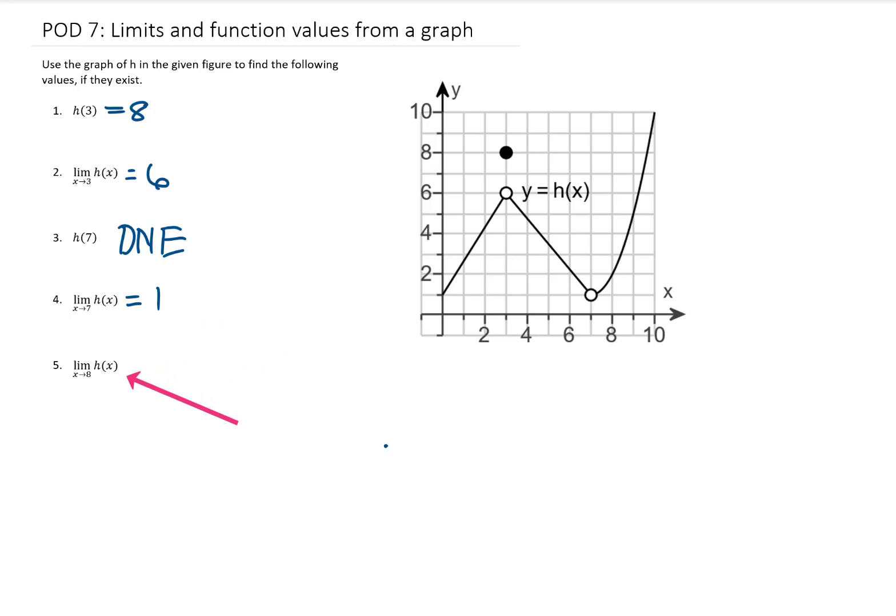Next, we want the limit as x approaches 8 of h of x. Well same deal, we're an ant on this function walking from either direction towards x equals 8. From the left, from the right, it doesn't matter. It looks like as x approaches 8, our height is going to approach 2. Okay great,